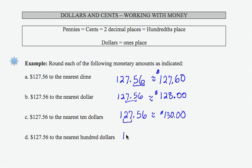$127.56, rounded to the nearest hundred dollars. I'm going to focus on these two digits right here. The one is in the hundreds place. The two is to the right. The two is less than five, so my approximation to the nearest hundred dollars is going to be $100.